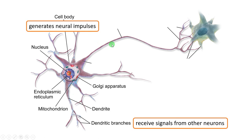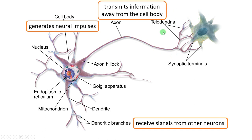The cell body is involved in maintaining and controlling all activities of the neuron and also provides energy. The third part is called the axon. The axon is the long single process or extension that carries signals away from the cell body. The telodendria are fine branches of the axon, and the axon ends in a synaptic terminal through which the nerve impulse is transmitted to the next neuron.